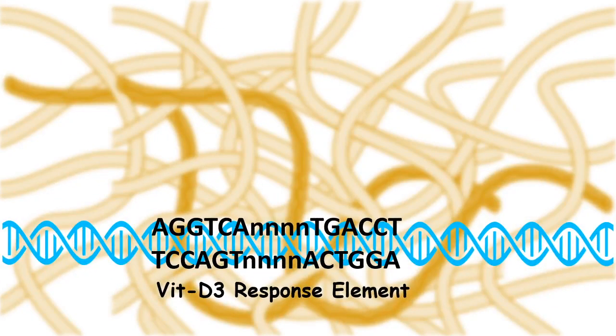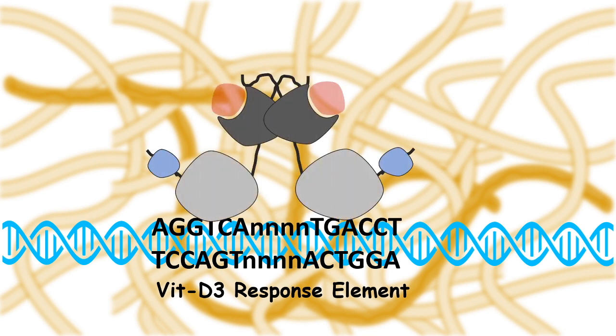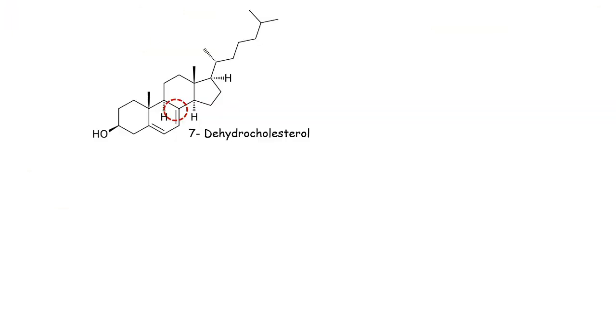Now vitamin D receptor along with the vitamin D bound to it forms a receptor homodimer that binds to the vitamin D3 response element. This leads to many levels of genetic changes. This mechanism is pretty much similar to steroid hormones like estrogen and progesterone. Now let's talk about its metabolism.